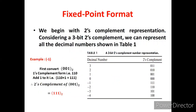Let us see some examples. We can observe a three-bit representation of decimal numbers ranging from three to minus four, where the respective two's complement representation in three-bit format is as shown. Three is given as 011, two as 010, one as 001, zero as 000, minus one as 111, minus two as 110, minus three as 101, minus four as 100.